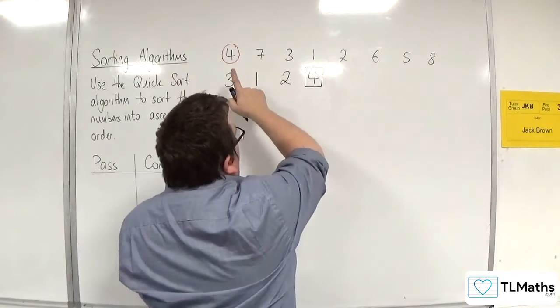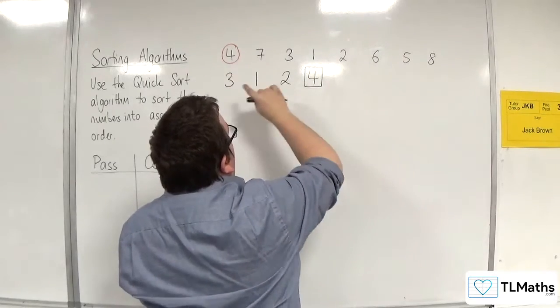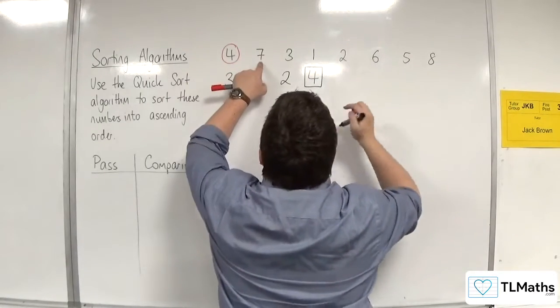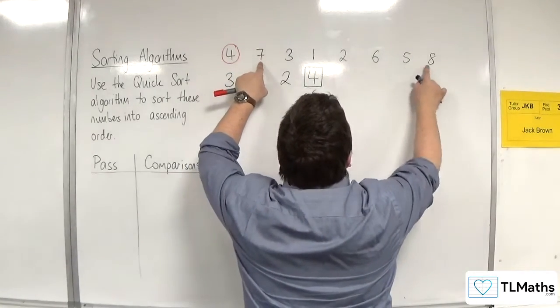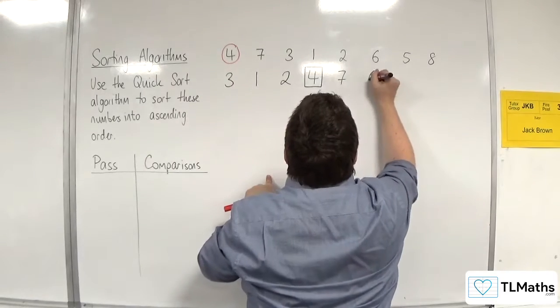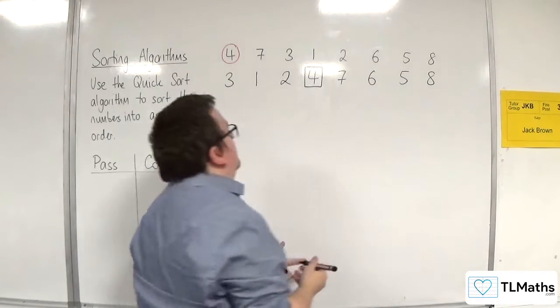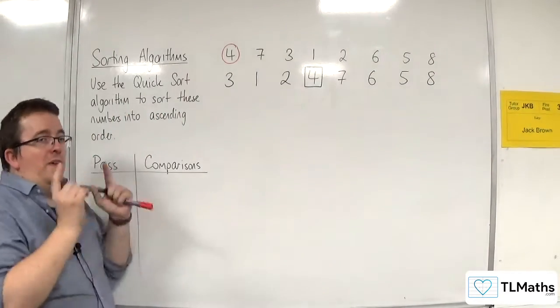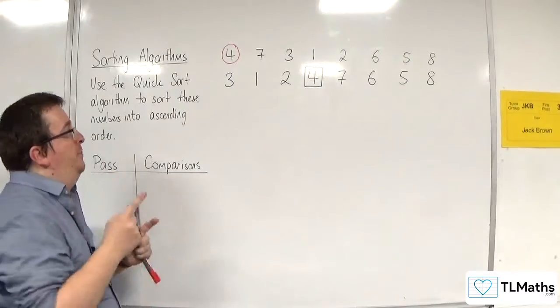Any number that is larger than four needs to go to the right of four, but must maintain the same order, so we have seven, six, five, eight. So that was the first pass.